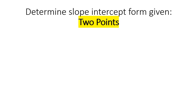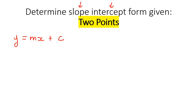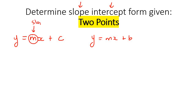In this lesson, we are going to learn how to find the equation of a straight line in slope-intercept form when they give us two points. We know by now that slope-intercept form is when you have it as y equals mx plus c. Some schools would also say y equals mx plus b. There are other letters you can use — it doesn't really matter. The letter in the front is the slope, and this letter over here is the y-intercept.